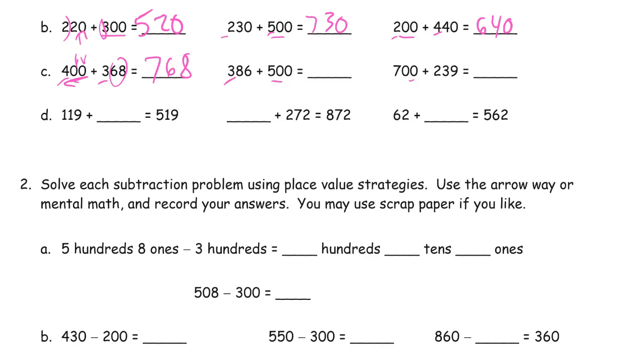So we've got 300 and 500, that's 800 and then we have the 86 so it's 886. 700 and 200, that's 900 and we have the 39 so it's 939.